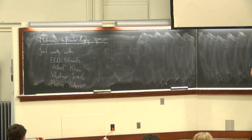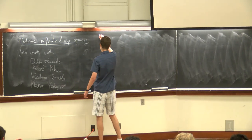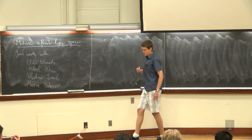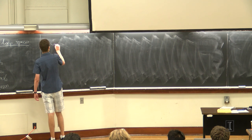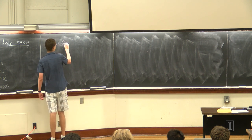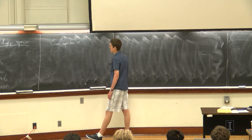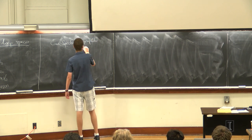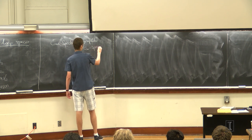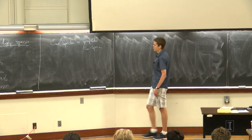The goal of this project is to understand the relationship between de-loopings and transfers in motivic homotopy theory. The topological version of that question has the following answer: connective spectra are the same thing as group-like infinity spaces. I'm going to tell you what the motivic version of this equivalence is.